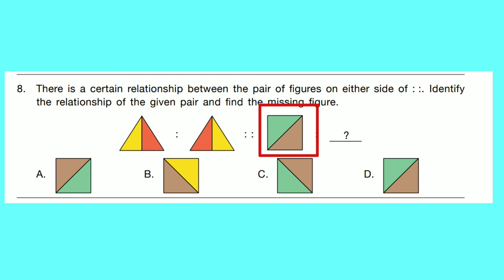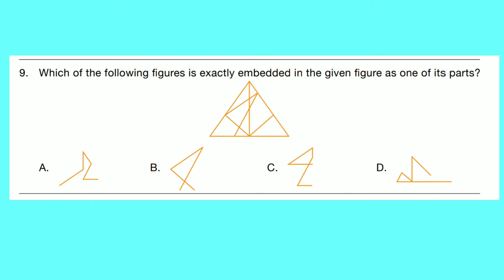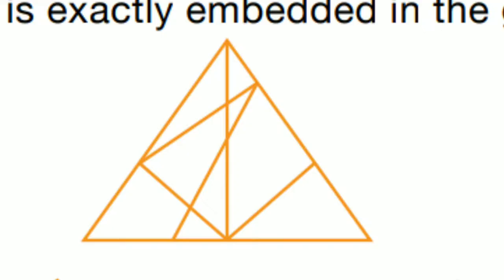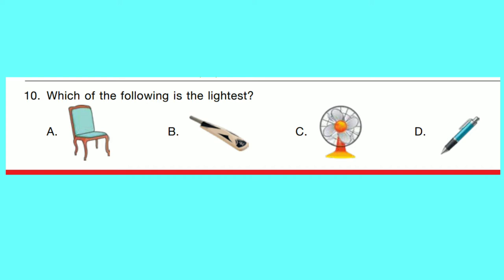Question number 9: Which of the following figures is exactly embedded in the given figure as one of its parts? Correct option is B — B is embedded here. Question number 10: Which of the following is the lightest? Correct option is D. Pain is lightest.